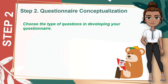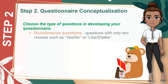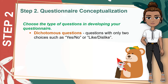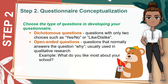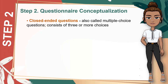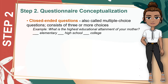Next is to choose the type of questions in developing your questionnaire. It can be dichotomous questions — questions with only two choices such as yes or no, or like and dislike. Or open-ended questions, which refer to questions that normally answer the question why. This type of question is usually used in qualitative research. For example: what do you like most about your school? For close-ended questions, also called multiple-choice questions, it consists of three or more choices. For example: what is the highest educational attainment of your mother? The respondent may choose elementary, high school, or college.